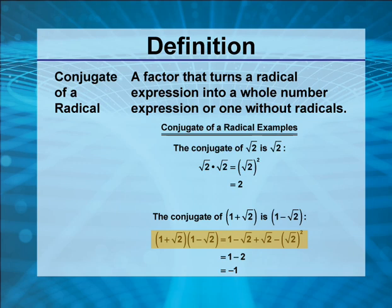Notice that the square root of 2 terms cancel each other out. And what you are left with is 1 minus 2, and that 2 comes from the squaring of the square root of 2. And 1 minus 2 is equal to negative 1.